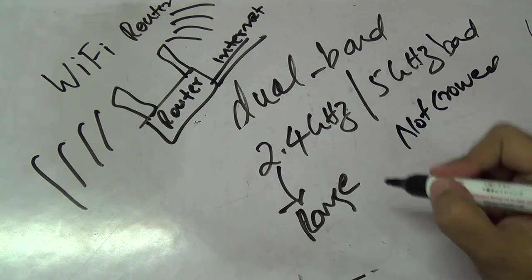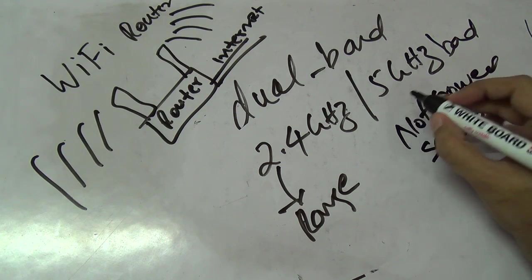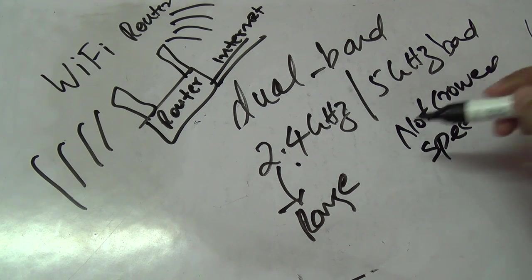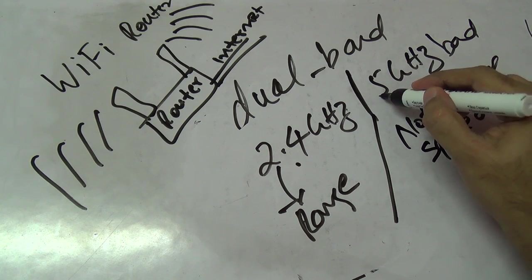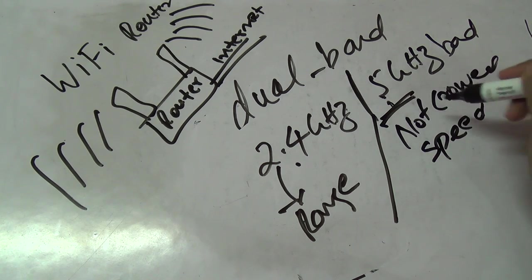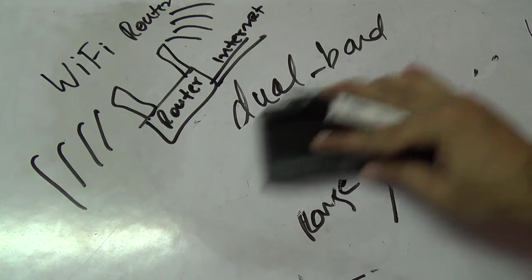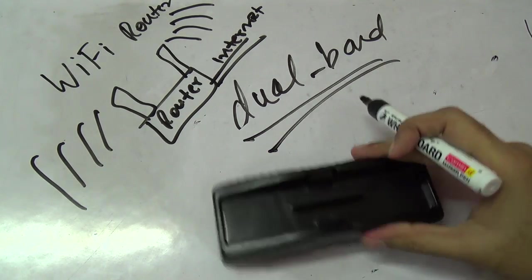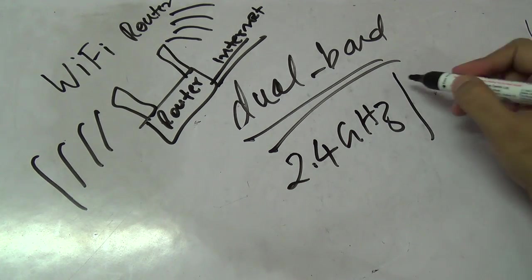The main advantage of the 5 gigahertz band is that as of now it's not that crowded. The biggest advantage is the speed you can get with 5 gigahertz is a lot more than 2.4 gigahertz. For normal casual web browsing and gaming that won't matter, but if you do a lot of wireless streaming of HD media, then 5 gigahertz makes a lot of sense.